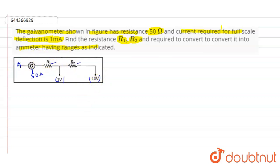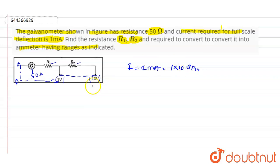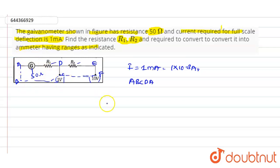Let us suppose this is end A and this is end B, connecting to both voltage points. We have the resistance of the galvanometer, and the current value i equals 1 milliamp, which can also be written as 1 × 10⁻³ amps. Applying Kirchhoff's loop law in loop A-B-C-D-A, where the points are labeled D, E, and F.